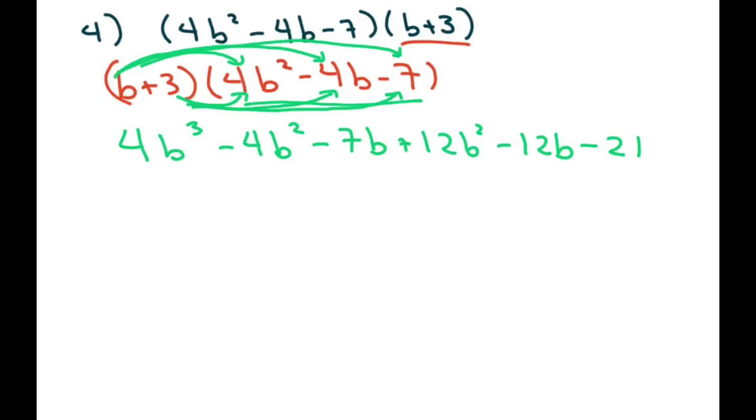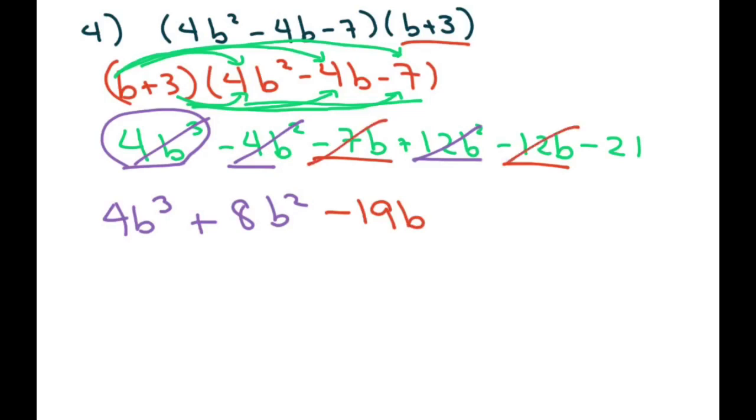And then we see what we can combine. We only have one b cubed. So that's 4b cubed. We have two b squared. So that's 12b squared minus 4b squared. That's 8b squared. So we took care of those. And now we have negative 7b minus 12b. That's negative 19b. So we took care of those. And then we have our minus 21. And that's it.